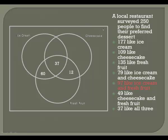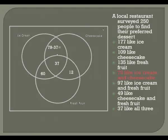The next one: 79 like ice cream and cheesecake. Again, they don't tell me anything about fresh fruit, so I'm going to have to subtract away that 37 who liked all three, and that gives me 42.